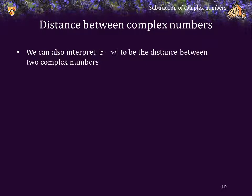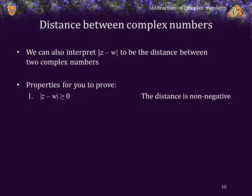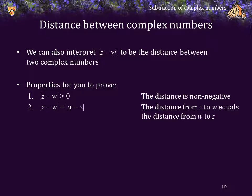Therefore, we can also interpret the absolute value of z minus w to be the distance between two complex numbers. So here's a few properties for you to prove: First, the absolute value of z minus w is not negative. The distance from z to w is equal to the distance from w to z. The distance from z to w is equal to 0 if and only if z and w are equal.